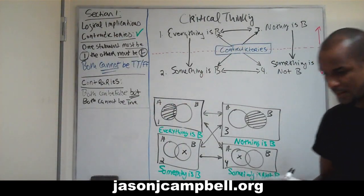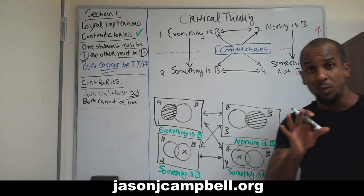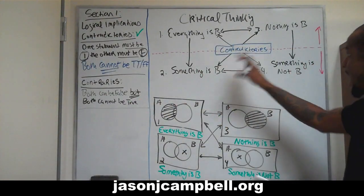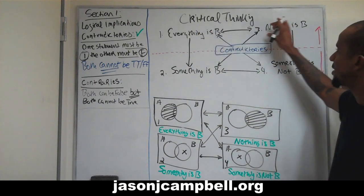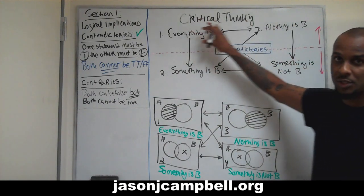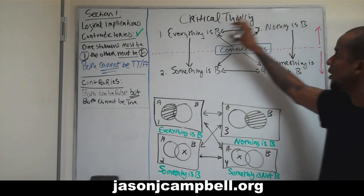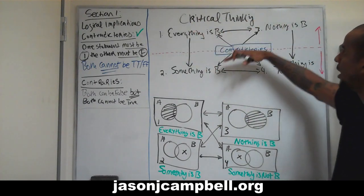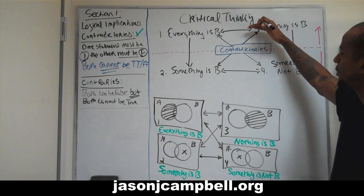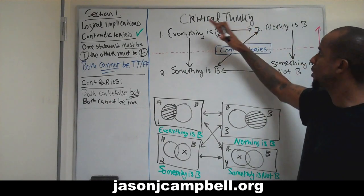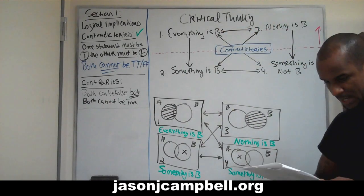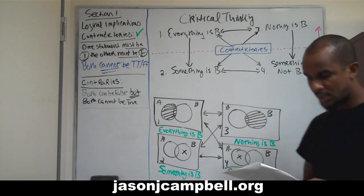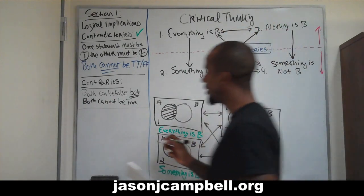Just commit that to memory. What's really important, aside from that, is the fact that you know that this is a contrary relationship. Contraries run at the upper horizontal, contradictories run diagonal, and the next one should be subcontraries.